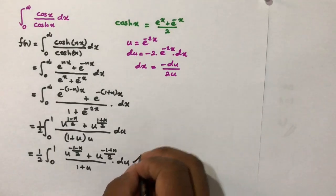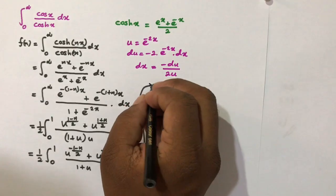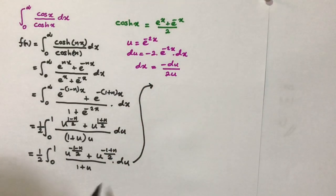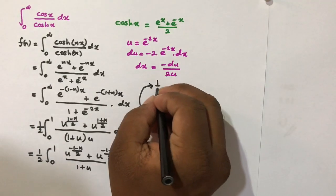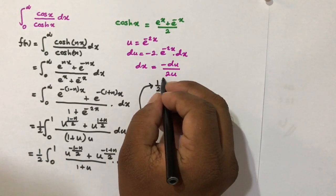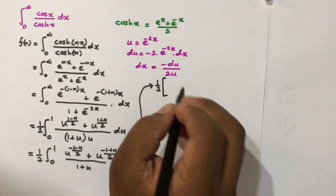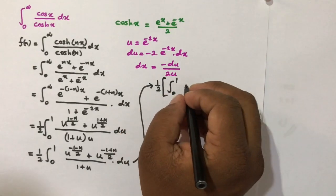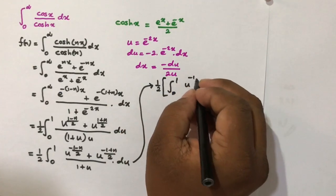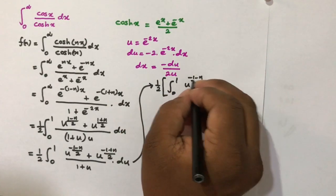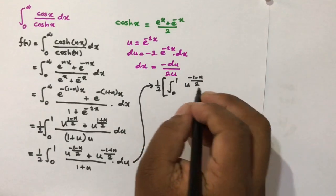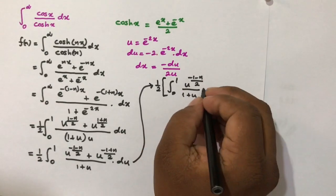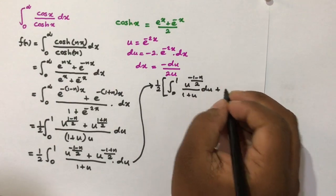As a next step, I am going to split this integral into two different integrals. We can write (1/2) times the integral from 0 to 1 of u^{-(1+n)/2} / (1+u) du, plus the corresponding second integral.